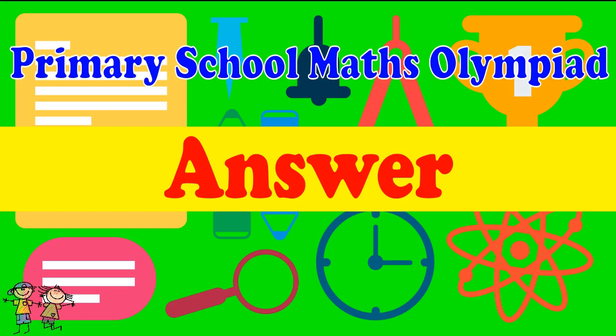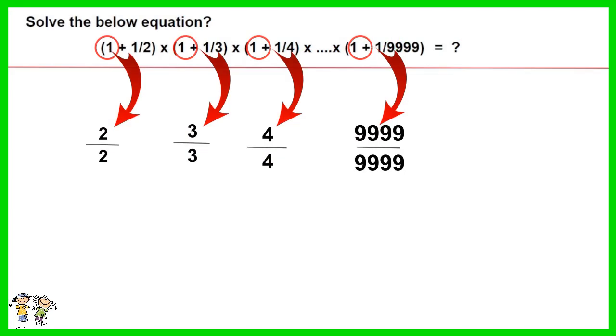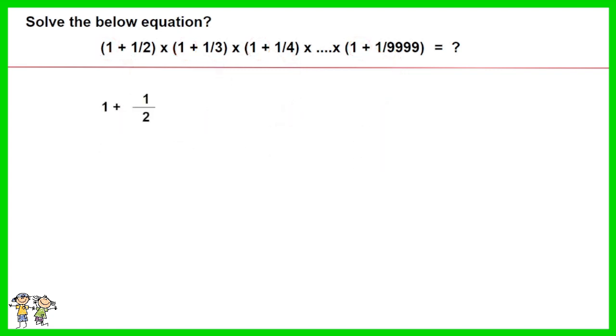Here is the recommended answer. First, let's change the value one in the equation to two over two, or three over three, or four over four, and so on, according to the denominator of the number to be added to the value one. For example, one plus one over two becomes bracket two plus one close bracket over two, and one plus one over three becomes bracket three plus one close bracket over three.